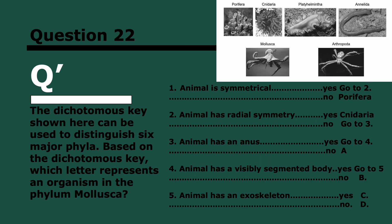Question 22, a dichotomous key. This will take a little while, but go through it and it should be pretty easy. Three, two, and one. If we look at one, animal is symmetrical. Mollusca, yes it is. So go to two. It has radial symmetry, it does not, it has bilateral symmetry. So go to three. It has an anus, it does. So go to four. Has a visibly segmented body? No it does not. A good example of a visibly segmented body is the annelida, the worms which have rings, but the octopus in this case does not. So it's B.